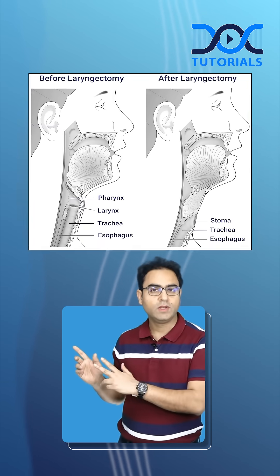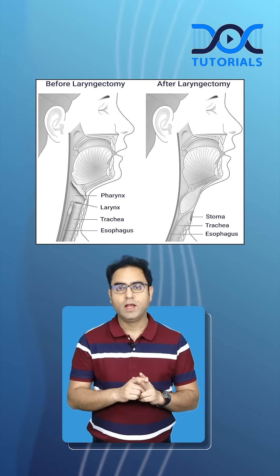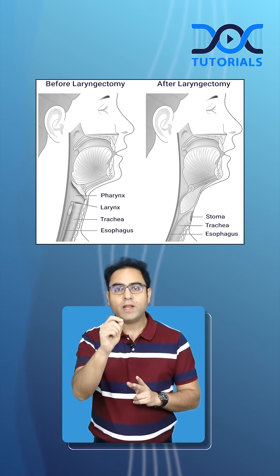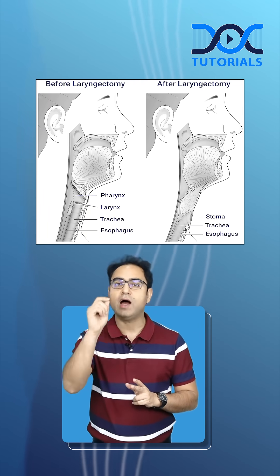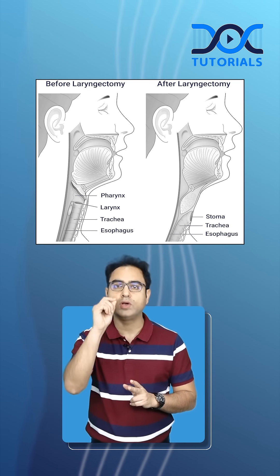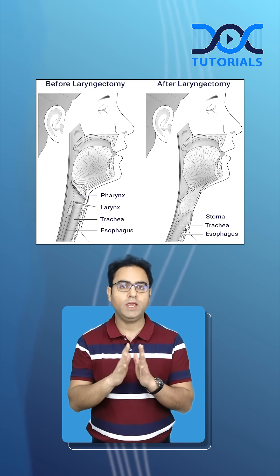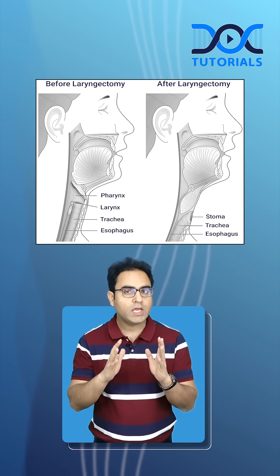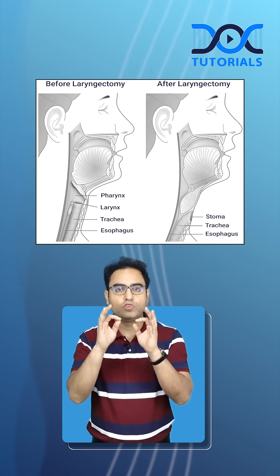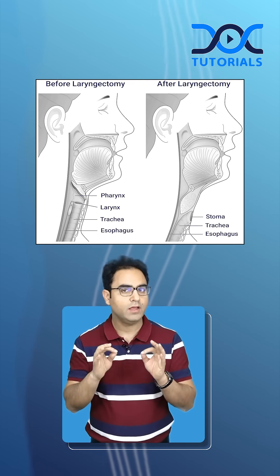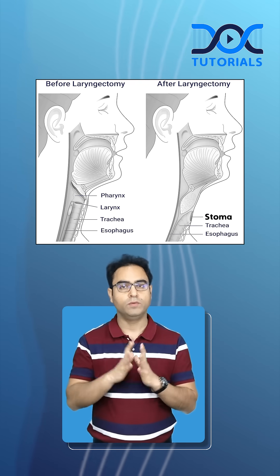Now look at this image. What does this image show? A permanent tracheostomy has been done after total laryngectomy. My dear friends, when you do a laryngectomy, the tracheal edges have to be sutured to the skin of the neck to make a permanent tracheostome.